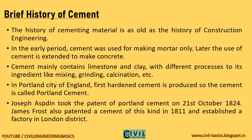Cement mainly contains limestone and clay, with different processes to its ingredients like mixing, grinding, calcination, etc. In Portland City of England, the first hardened cement was produced, so the cement is called Portland cement. Joseph Aspdin took the patent of Portland cement on October 21, 1824. James Frost also patented a cement of this kind in 1811 and established a factory in London District.